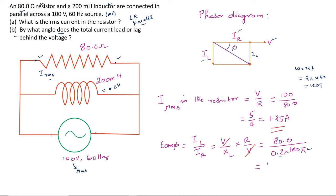Simplifying, 1.06, that is tan phi equals 1.06. So, phi equals 46.7 degrees. By what angle does the total current lead or lag? That angle is 46.7 degrees. The total current lags behind the voltage by phi, which is 46.7 degrees.